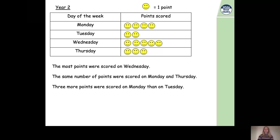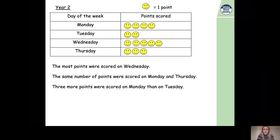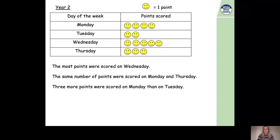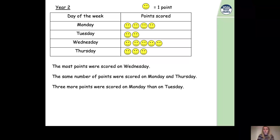Now we've got a true or false question. Statement one: the most points were scored on Wednesday. Statement two: the same number of points were scored on Monday and Thursday. Statement three: three more points were scored on Monday than on Tuesday. Let's look at the first one. How many smiley faces are there on Wednesday? There are five. On Tuesday there are two, on Monday four, and on Thursday three. So Wednesday has the most — five smiley faces equals five points. That statement is true.